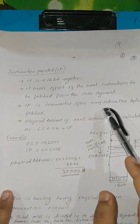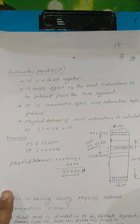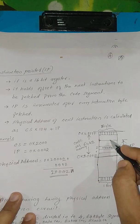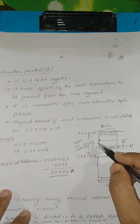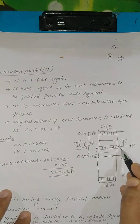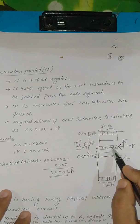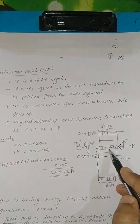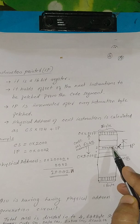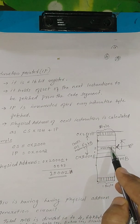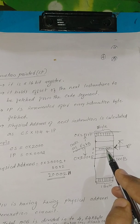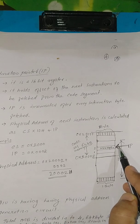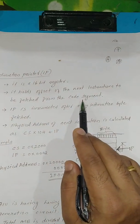The Instruction Pointer is incremented after every instruction byte is fetched. The code segment memory is 64 kilobytes. The Instruction Pointer holds the effective address of the next instruction to be fetched — for example, a MOV AX, BX instruction whose hex code is stored in the code segment. The Instruction Pointer basically points to the next instruction to be fetched from the code segment memory.